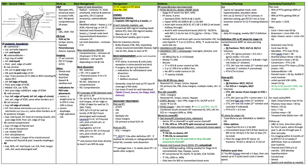Neck management: the ipsilateral neck should be addressed. If treating with radiation alone, treat the primary and the neck — the only exception is some parotid and skin cancers. If doing surgery, do an ipsilateral neck dissection. Indications for contralateral neck dissection are gross lymph node involvement or a midline structure. Generally, treat bilateral necks with radiation.